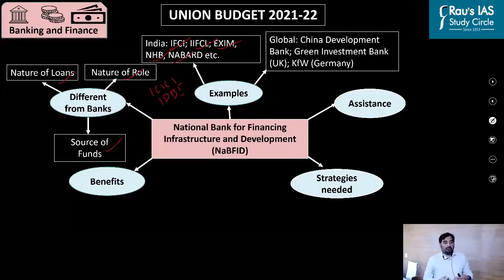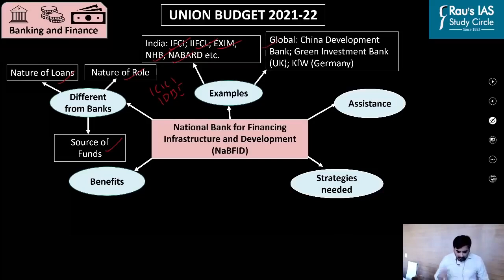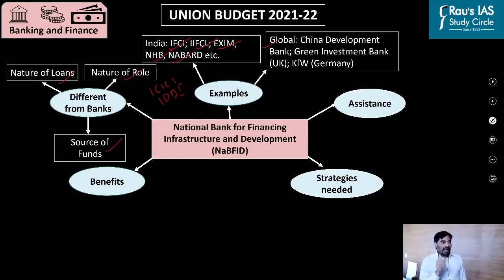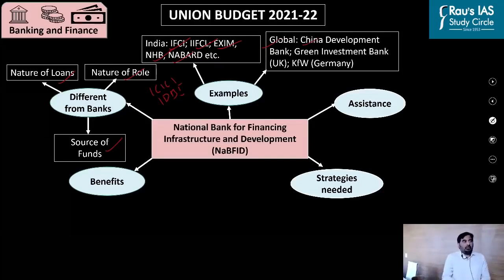NHB gives loans for the purpose of housing projects. As far as global examples are concerned, after the 2007-08 financial crisis, countries across the world set up development banks to expedite economic recovery and promote growth. One of the biggest is the China Development Bank — one of the main reasons for China's phenomenal GDP growth rate has been attributed to this particular development bank.